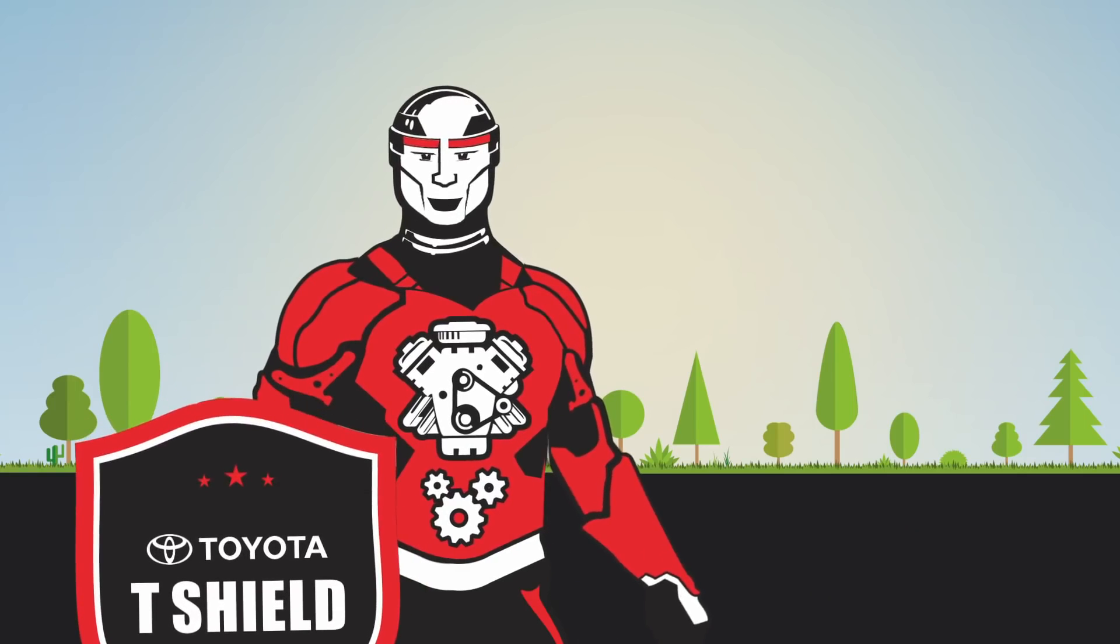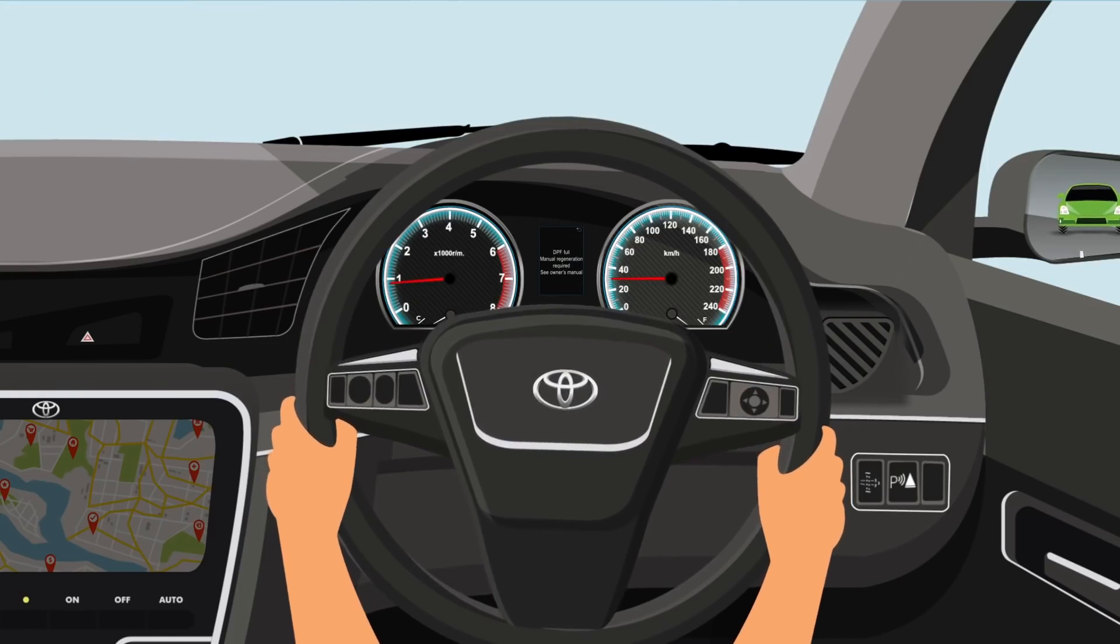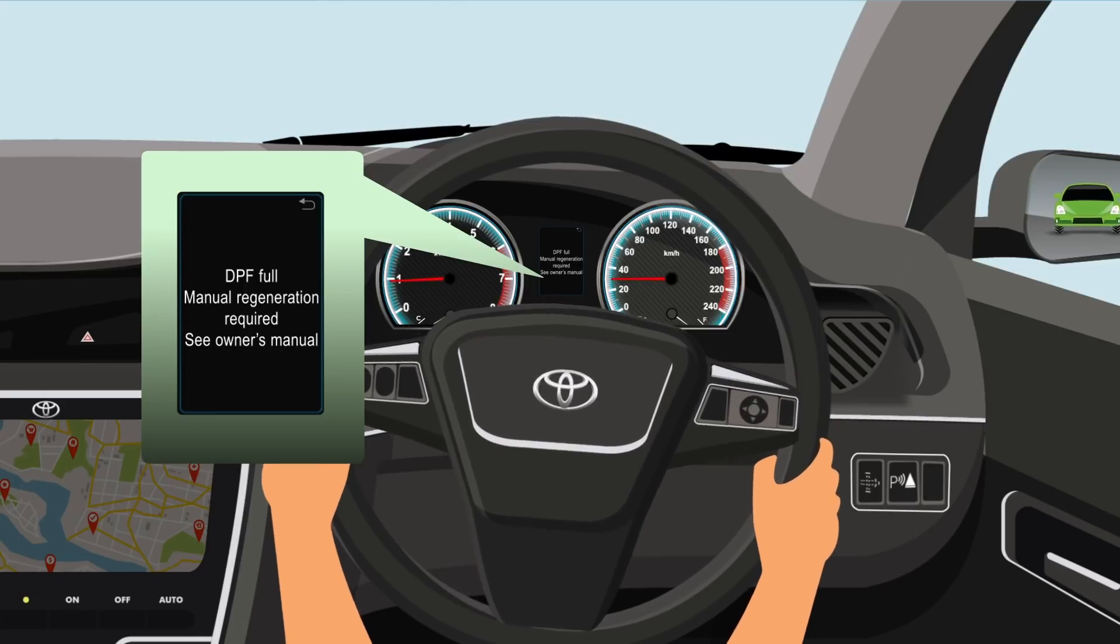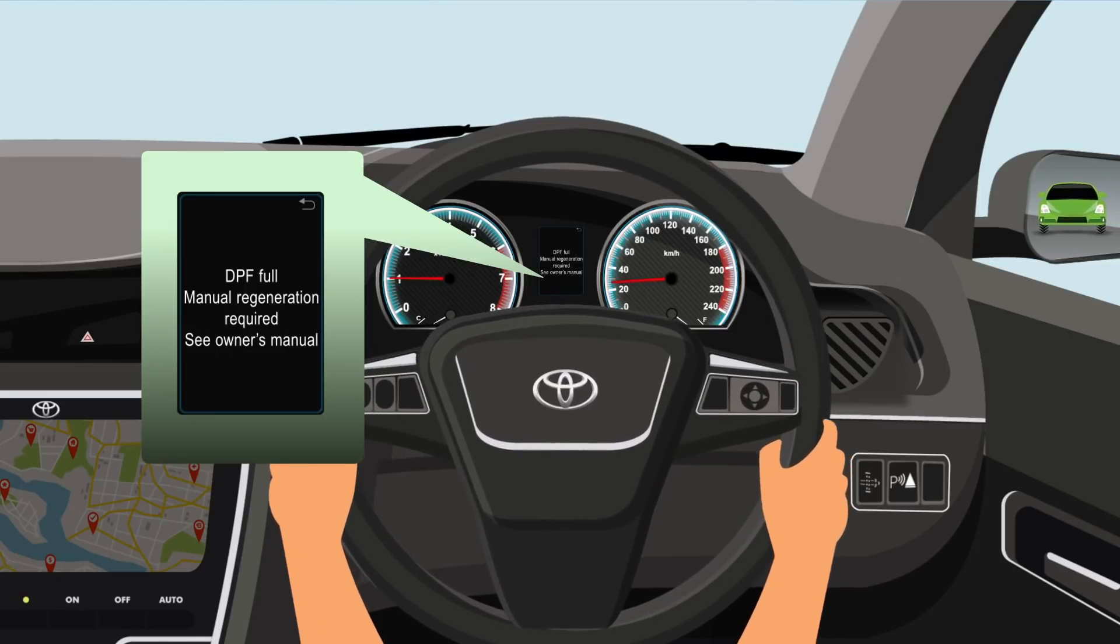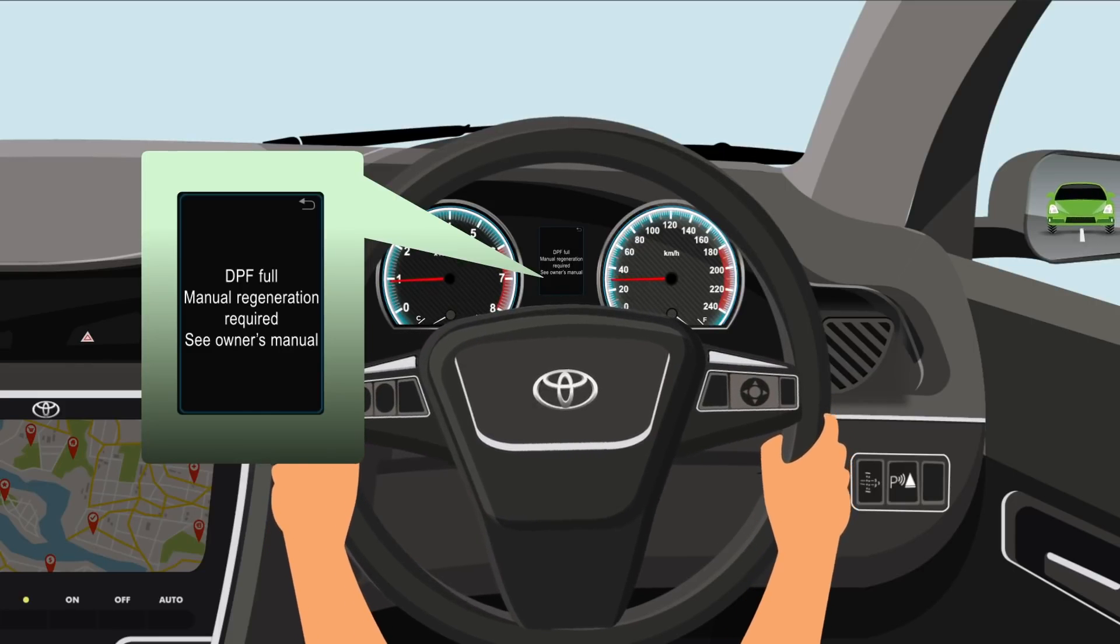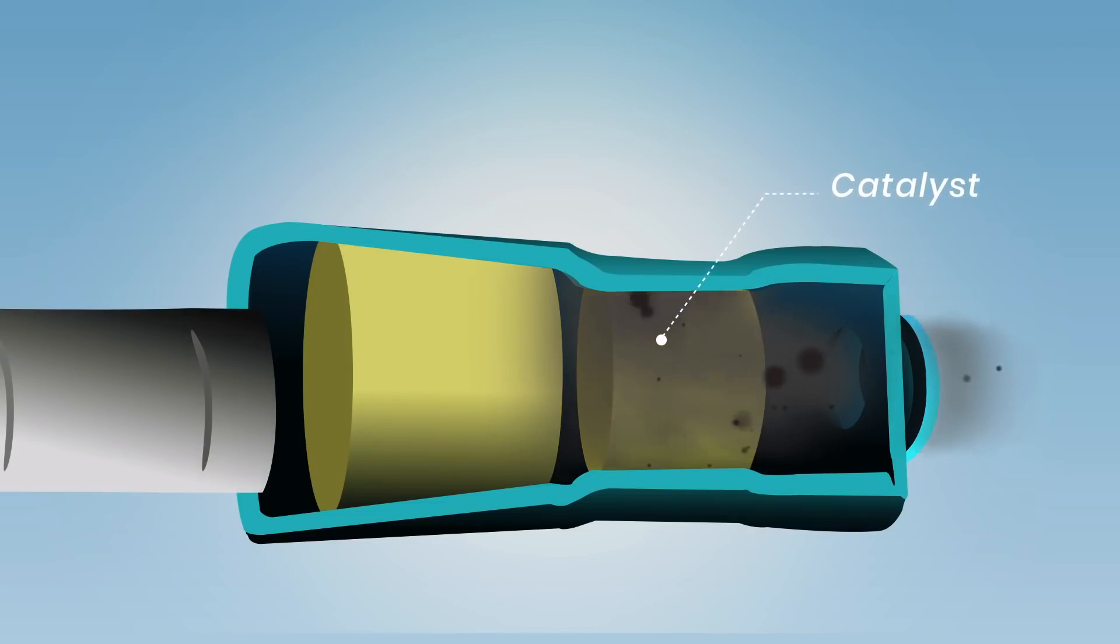Hi, I am T shield. I shall guide you on what needs to be done when the DPF system warning message appears in your BS 6 diesel vehicle. This warning message is displayed due to the accumulation of carbon particles in the diesel particulate filter or DPF system. These carbon particles may need to be flushed out through a regeneration process.